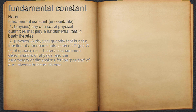2. Physics: a physical quantity that is not a function of other constants, such as pi, c (light speed), etc. — the smallest common denominators of physics, and the parameters or dimensions for the position of our universe in the multiverse.